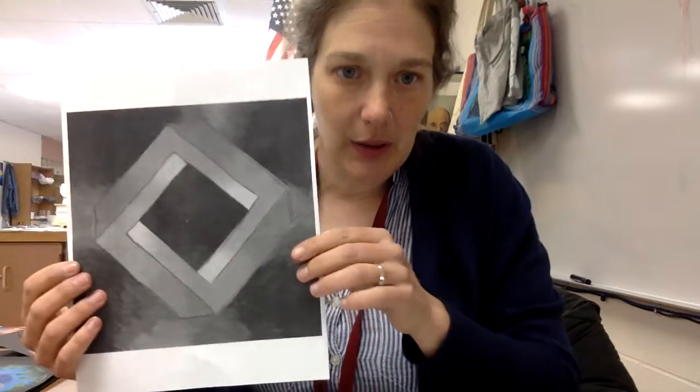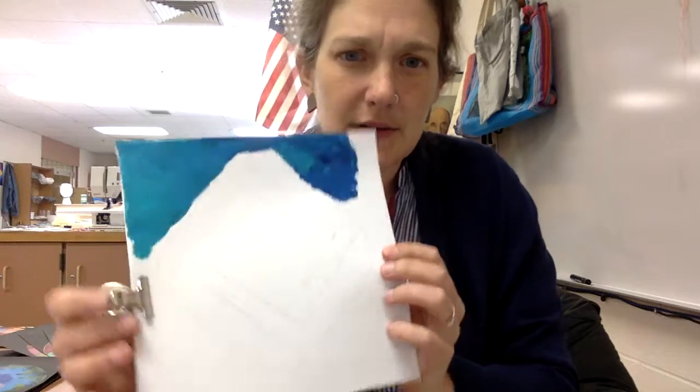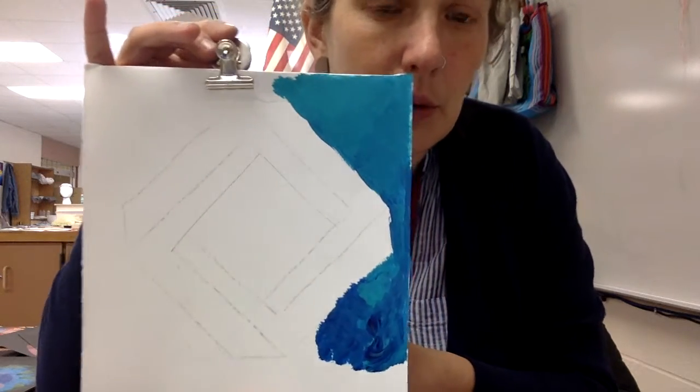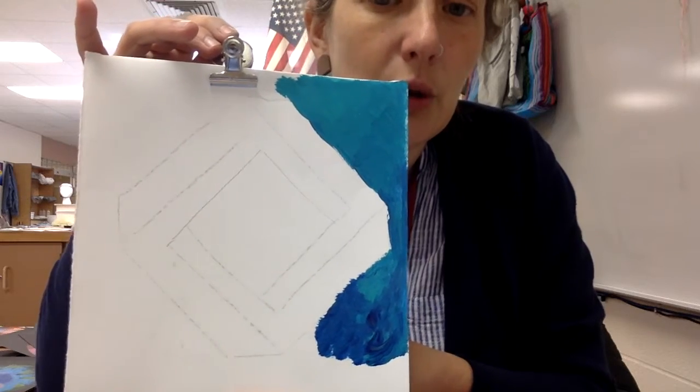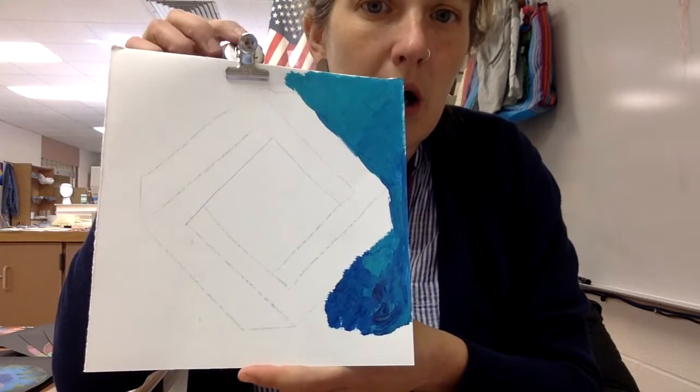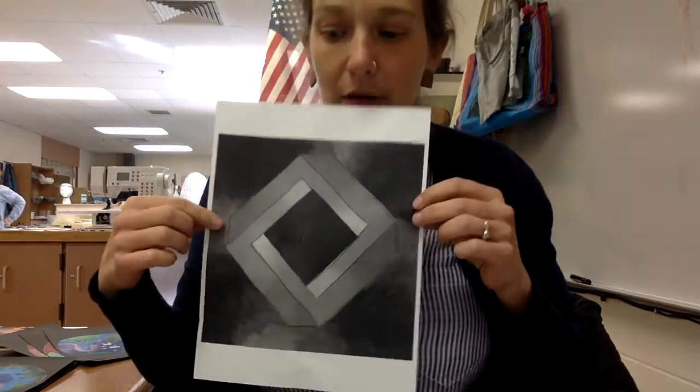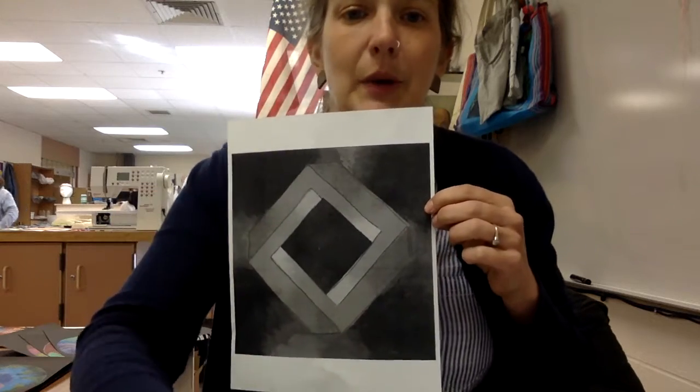Hi guys! To continue your impossible shape after you transfer it to this page—remember the transfer method I demoed, by coloring on the back—you're going to match values. What you want to do first is the background, so I'm going to do my background tealish blue.